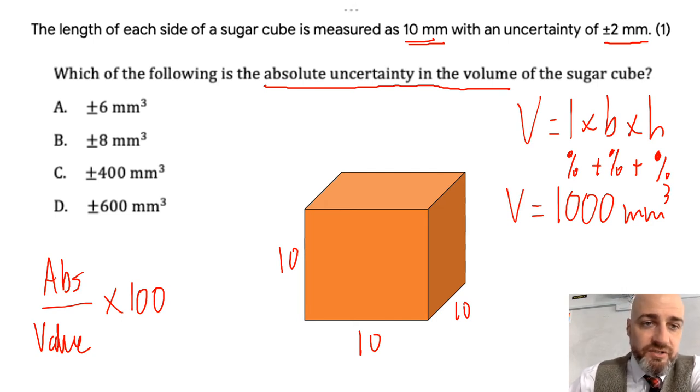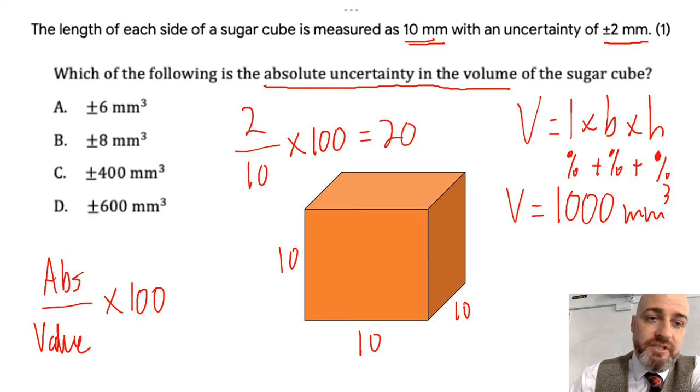So the percentage uncertainty in this case would be 2 divided by 10 times 100, which gives us a 20% uncertainty measurement on any one side. And when you're propagating the uncertainty, you add them together. So I've basically got 20 plus 20 plus 20, which gives us plus minus as a percentage of 60%.